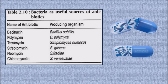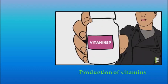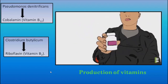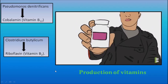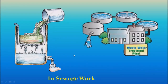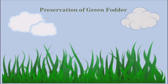Serum and vaccines can also be obtained from bacteria or microorganisms. The next benefit of microorganisms is production of vitamins. Some bacteria produce vitamins of commercial importance. Pseudomonas denitrificans produces Cobalamin, i.e., Vitamin B12, and Clostridium butylicum produces Riboflavin, i.e., Vitamin B2. The next use is in sewage work. Putrefying bacteria are used to remove the solid and semi-solid constituents of sewage under anaerobic conditions. After treatment, the constituents get decayed and liquefied, filtered, and the liquid is drained out into the river. The next and last benefit of microorganisms is preservation of green fodder. Some bacteria are used in the preservation of green fodder in silos.